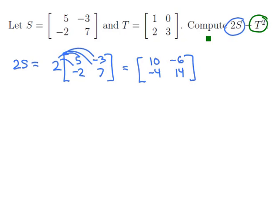Now let's focus on the T squared bit. That just means take the matrix T, which is [1, 0; 2, 3], and multiply it by itself. Now to make sure that this makes sense, let's check if it's defined.